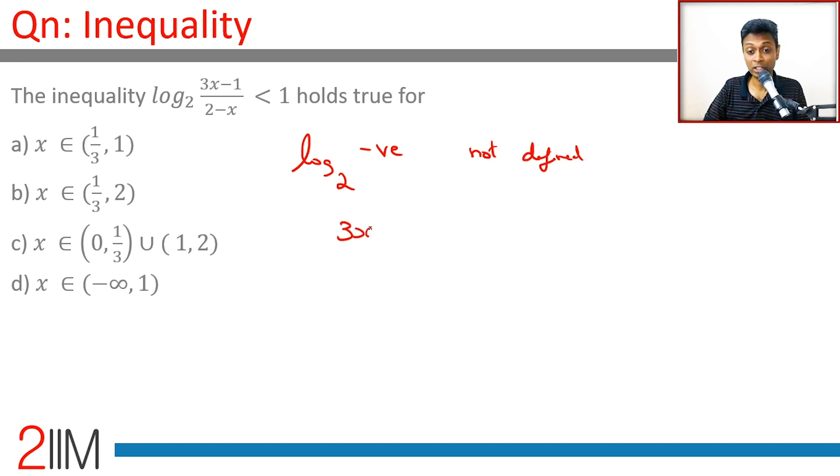That means (3x-1)/(2-x) is greater than 0. Even 0 is not defined; log is defined only for positive numbers. So (x-1/3)/(2-x) greater than 0.